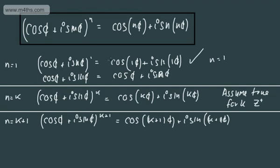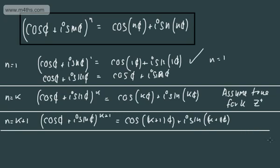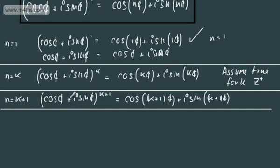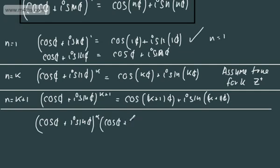So let's take a look at what we've got here. If this is true, and we've assumed it works for the one before, what we're going to do is rewrite this part using rules of indices. We can write cos θ plus i sin θ to the power of k plus 1 as cos θ plus i sin θ to the power of k, multiplied by cos θ plus i sin θ to the power of 1. That's just using rules of indices — fairly straightforward.